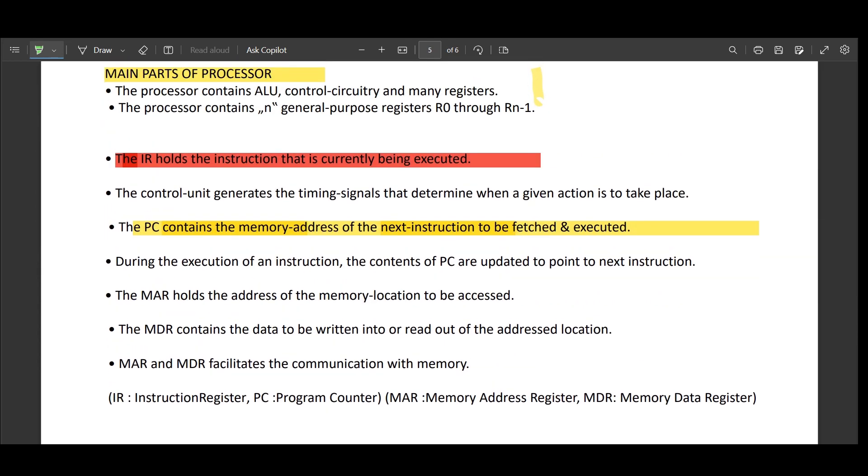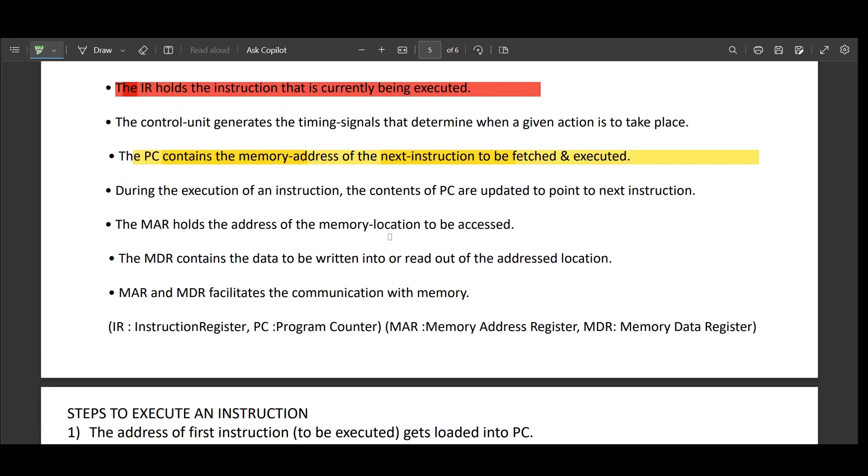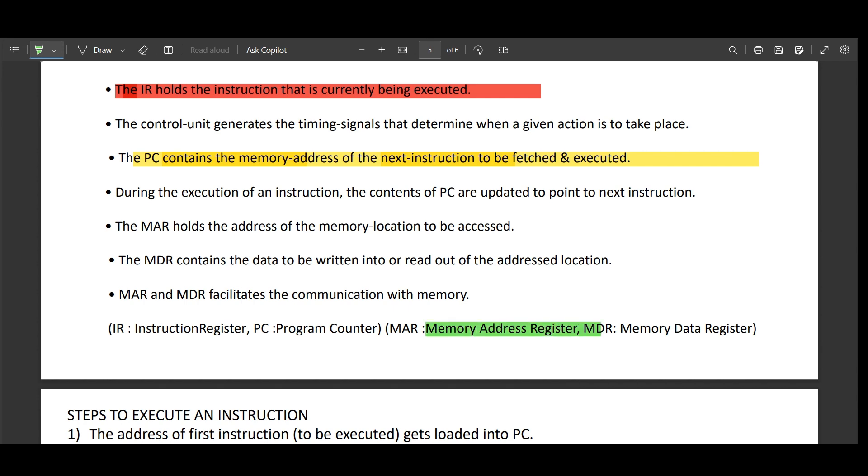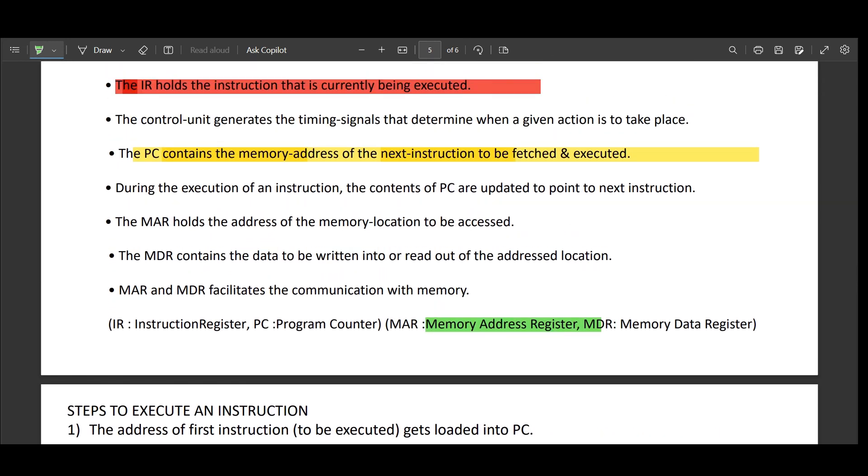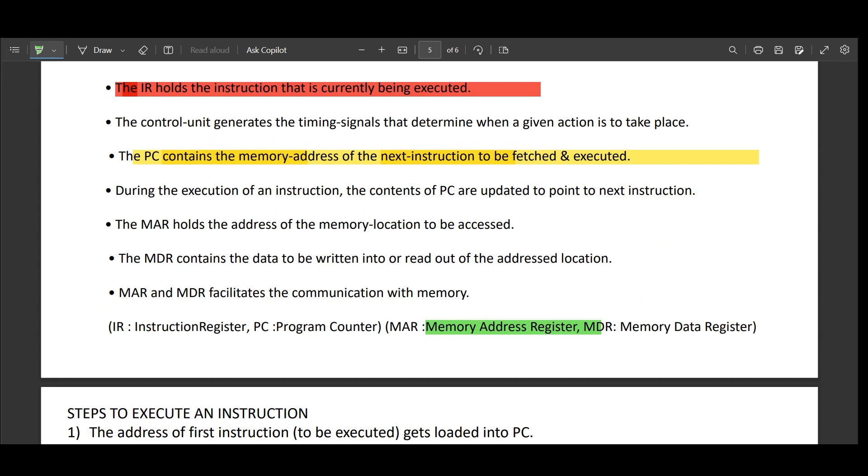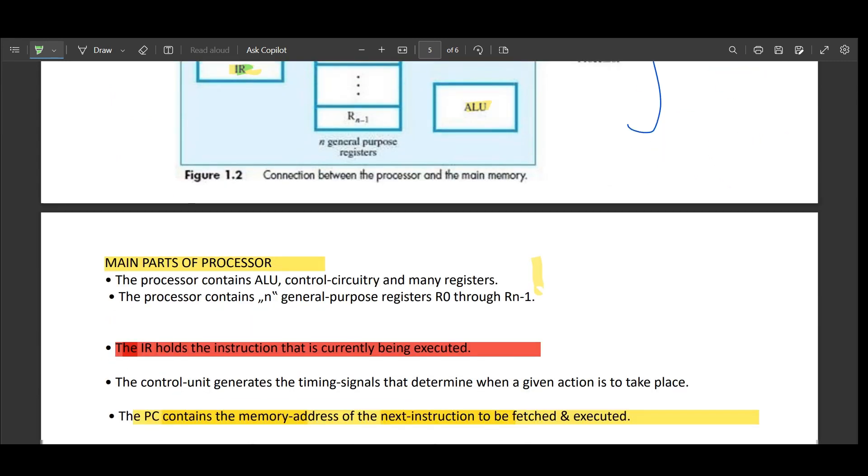What happens during the execution of instruction? As you all know, I have told that PC will hold the instruction, next instruction to be fetched and executed. That is what I mentioned here, updated to point to the next instruction. And what is this MAR? MAR stands for memory address register. It holds the address of memory location to be accessed. Where this MAR comes, this MAR, MDR that I have mentioned here will come here in the processor memory interface. That you can find in your textbooks.